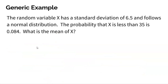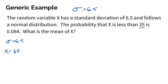Now let's do a set of problems finding the mean — a very similar idea. The random variable x has a standard deviation of 6.5 and follows a normal distribution. The probability that x is less than 35 is 0.084. So the actual value is 35, and there is 8.4% below it — which simultaneously means 0.916 is above it. Remember, there are always two sides to a probability.